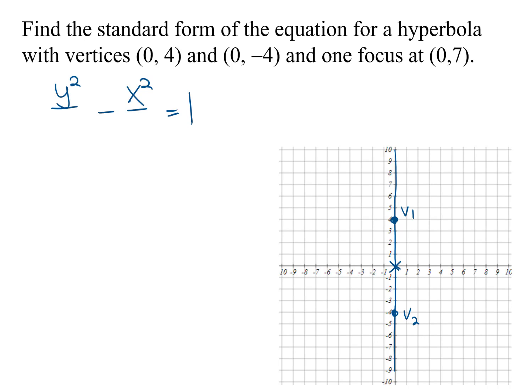Now let's go ahead and put on a focus. Focus is at (0, 7). So there's a focus. We know another focus would be at (0, -7) then because they're symmetric. So there's the second focus.